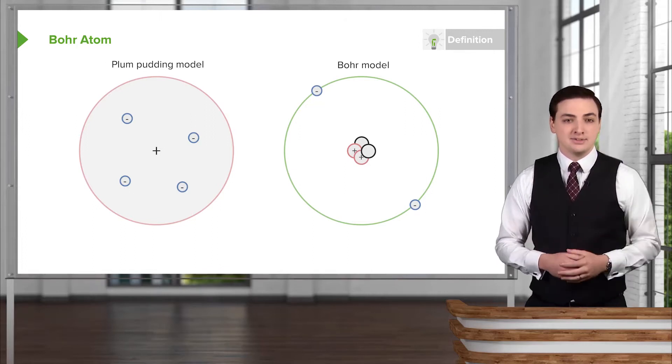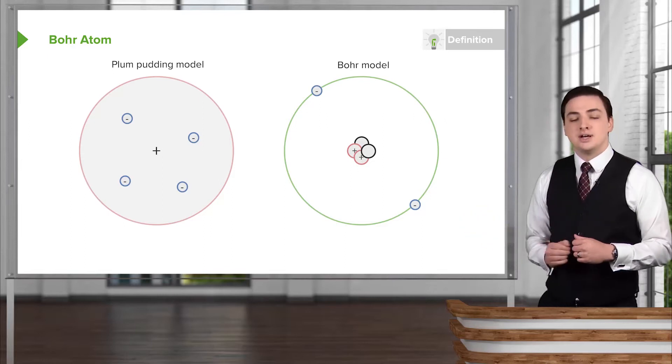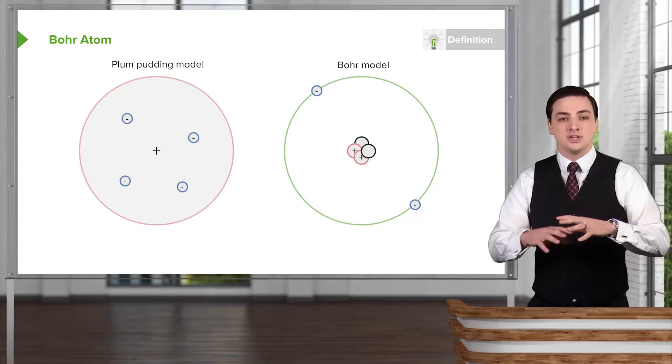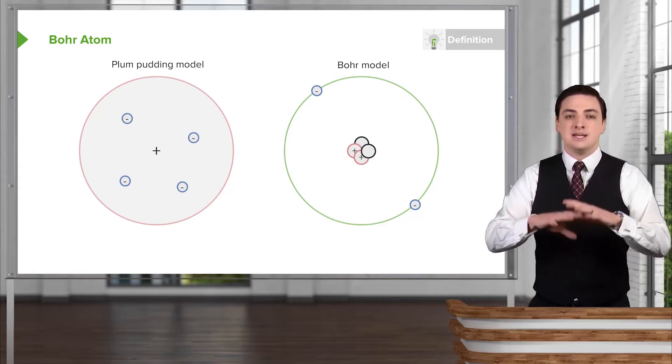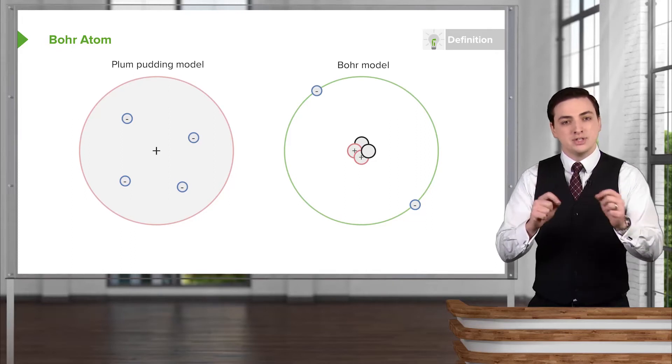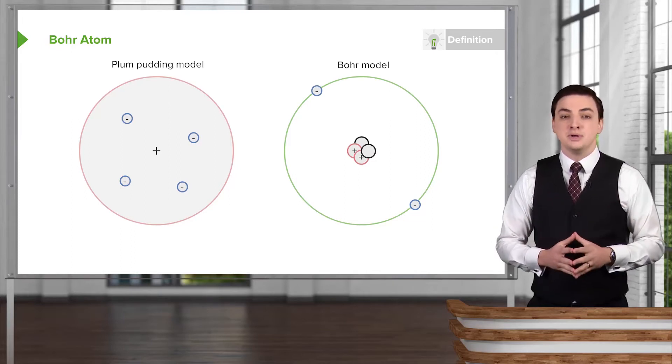In the plum pudding model, as it's called, we have this distribution on the left here where we have a big positive charge, a positive sign in the middle there, that was distributed through the whole atom with negative charges interspersed between, sort of like plums and plum pudding.